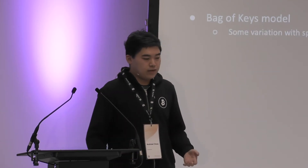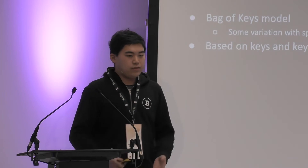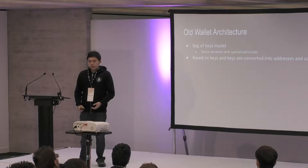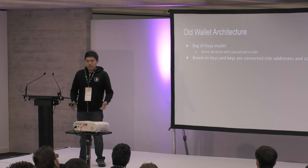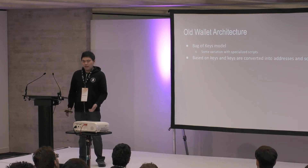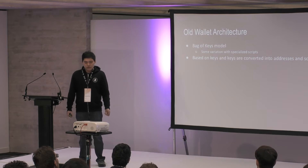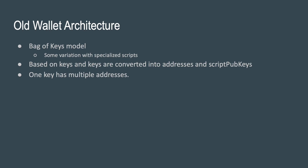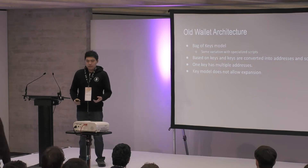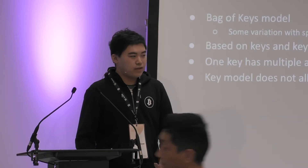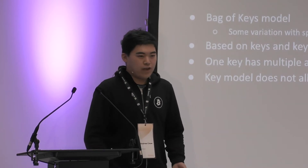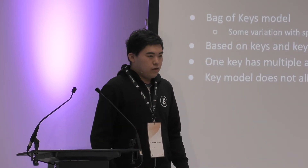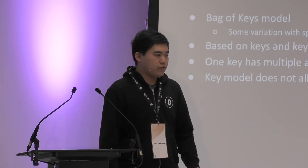What we do with those keys is take a key and convert it into addresses and script pubkeys. So you take a key and wrap some script around it to make a P2PKH script pubkey, make that an address, and hand it to the user. The problem with this is that besides one key having multiple addresses, we can't use a single key to make multisigs. We can't give out multisig addresses or addresses that correspond to arbitrary scripts.